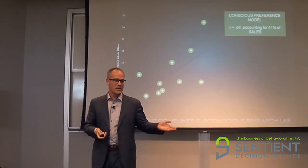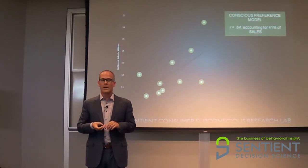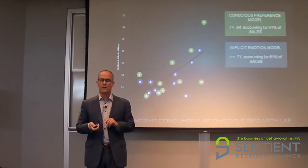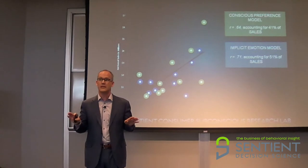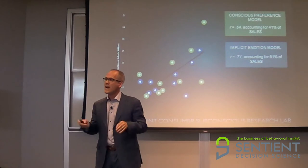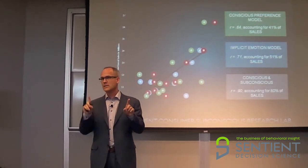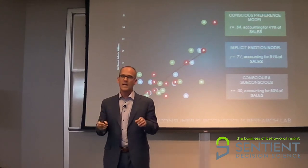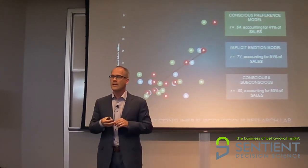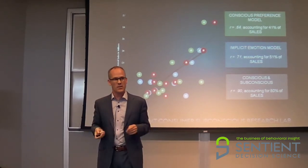Sales data is on the Y, predictions are on the X. This is the conscious model: an R of 0.64, accounting for 41% of sales — that's the conjoint. Here's the emotional model: an R of 0.71, accounting for 51% of sales — that's just the implicit data. So if you had to choose one, you'd say give me the implicit. But the point is you don't have to choose one, and we shouldn't. We should combine our best conscious and subconscious methods together. When you combine them, we have an R of 0.9, predicting 80% of actual in-market sales before they even occurred.